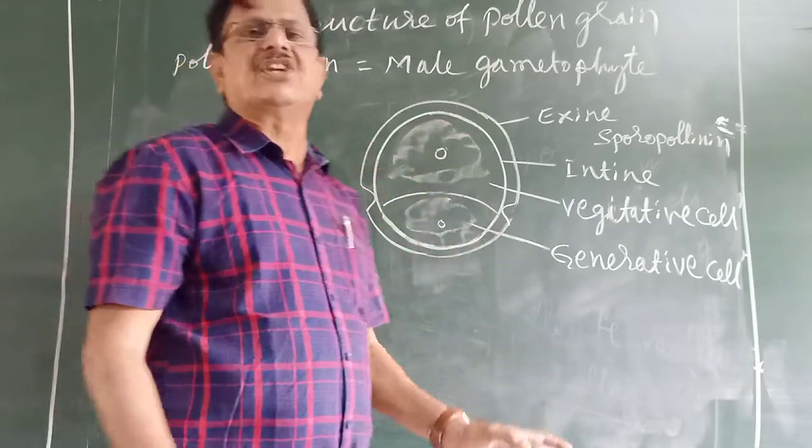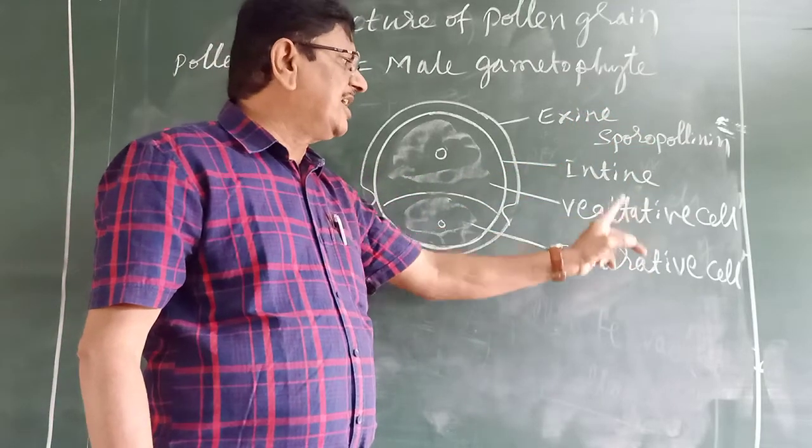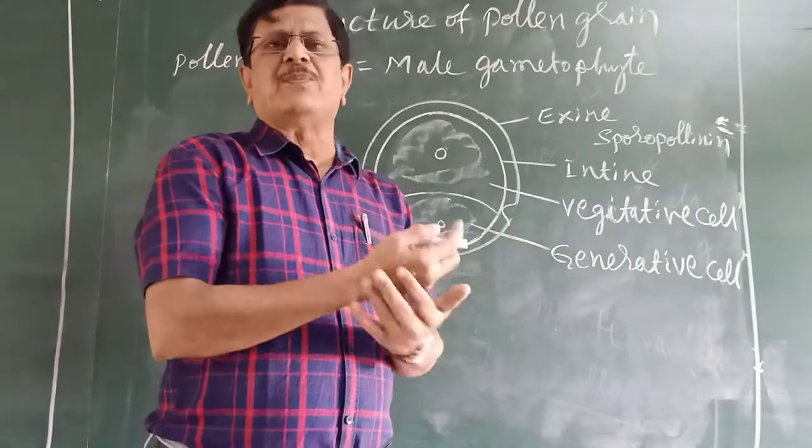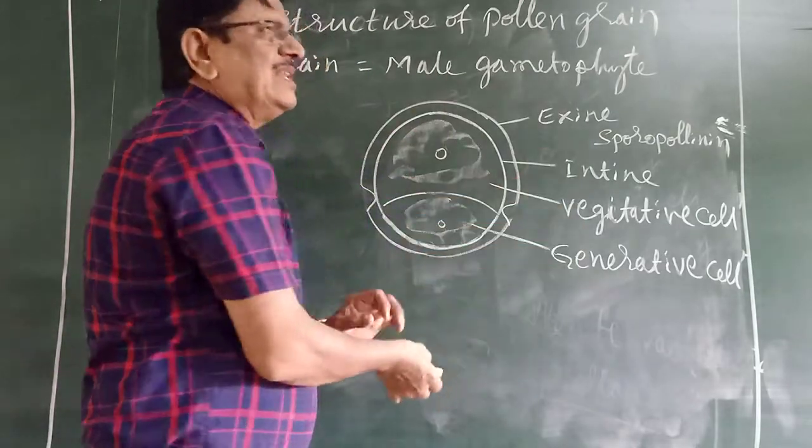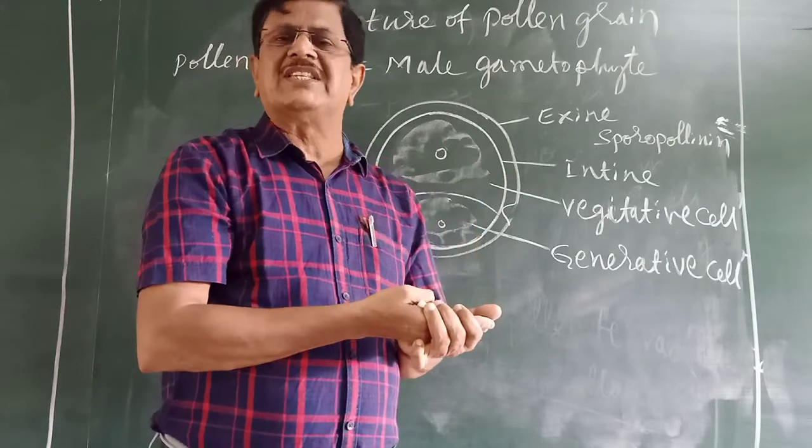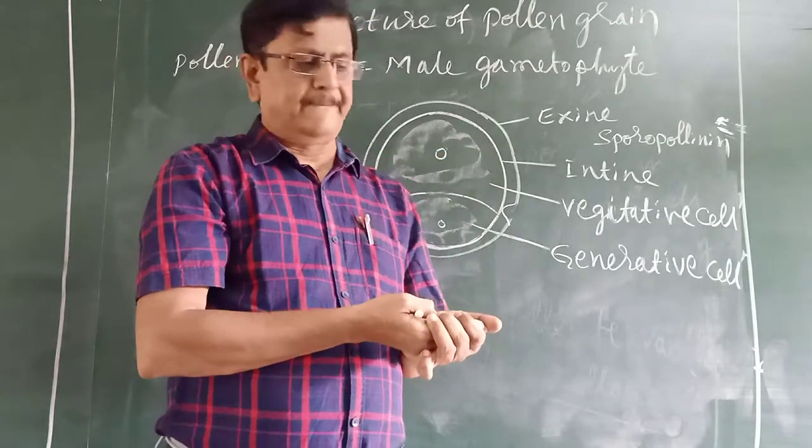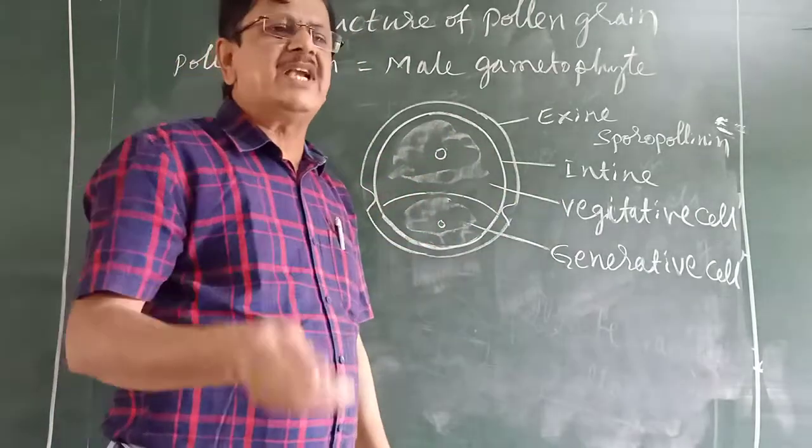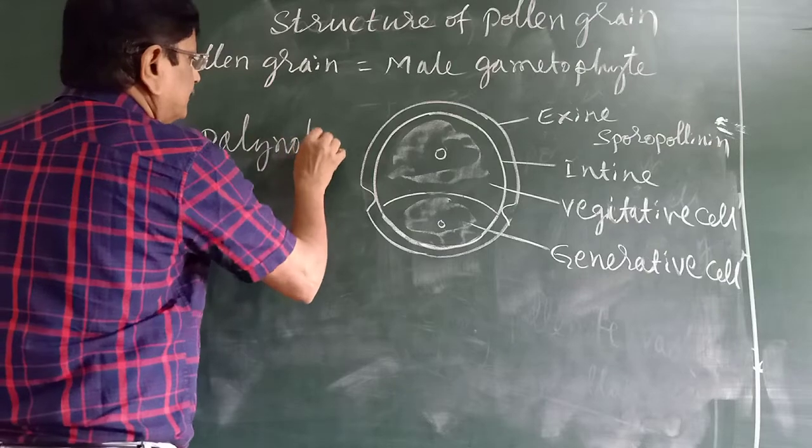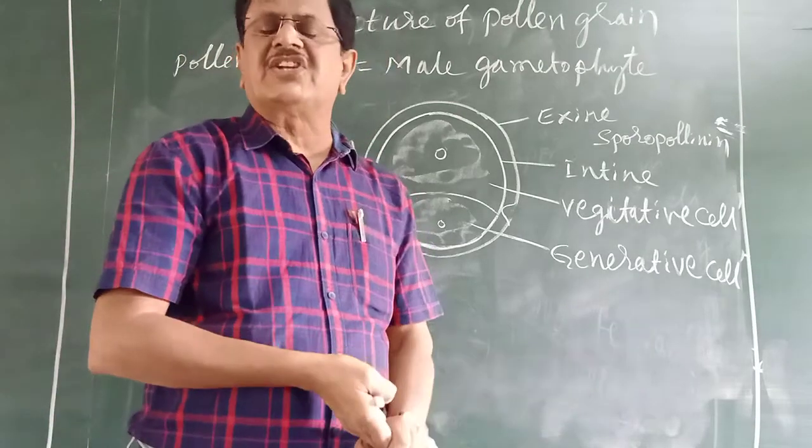This is called the structure of pollen grain: exine, sporopollenin, intine, pectocellulose, vegetative cell, generative cell. In some species of plants, the pollen grain's outer layer is covered by a gummy or sticky substance called pollenkitt. The study of pollen grains is a separate branch in biology called palynology.